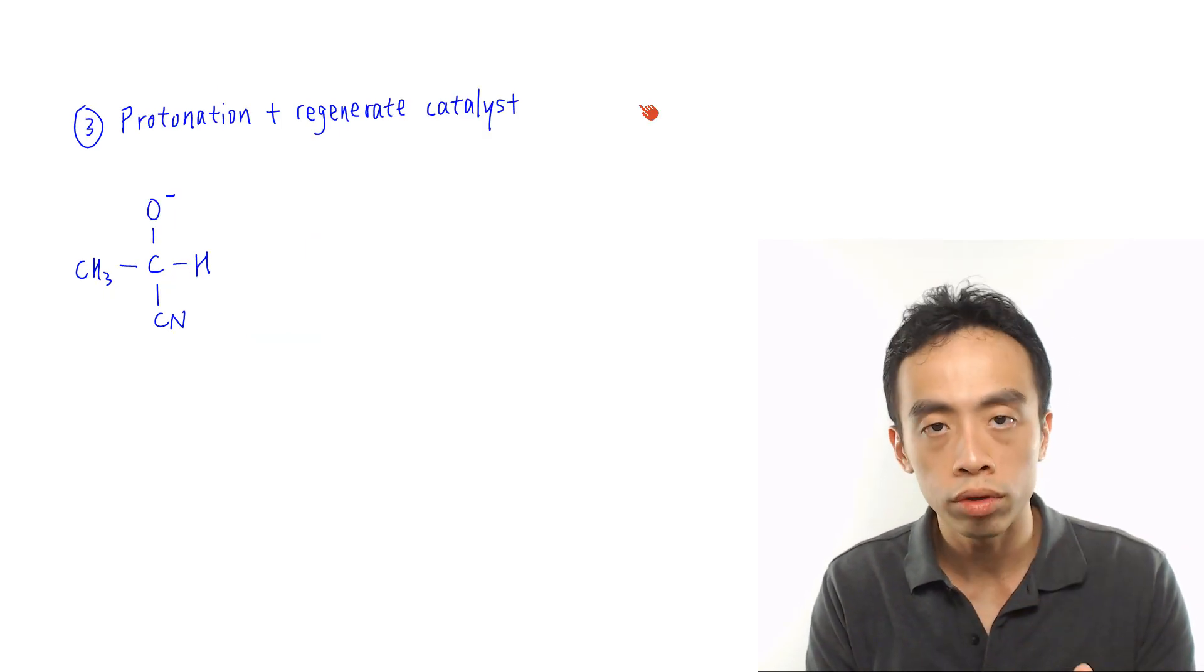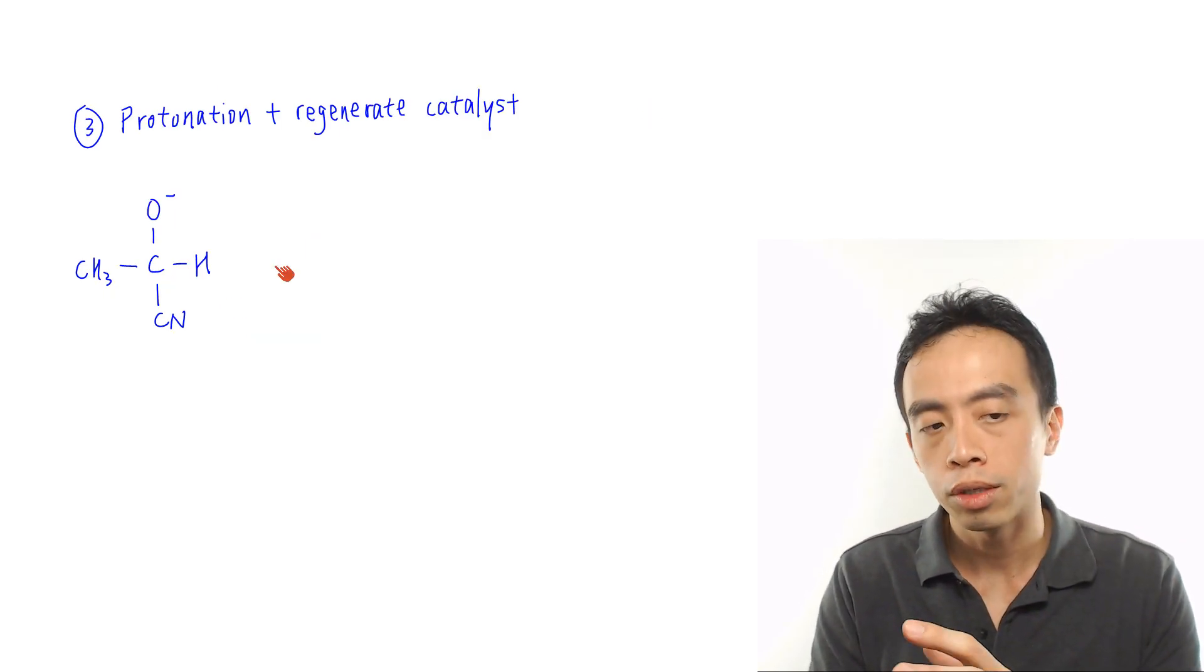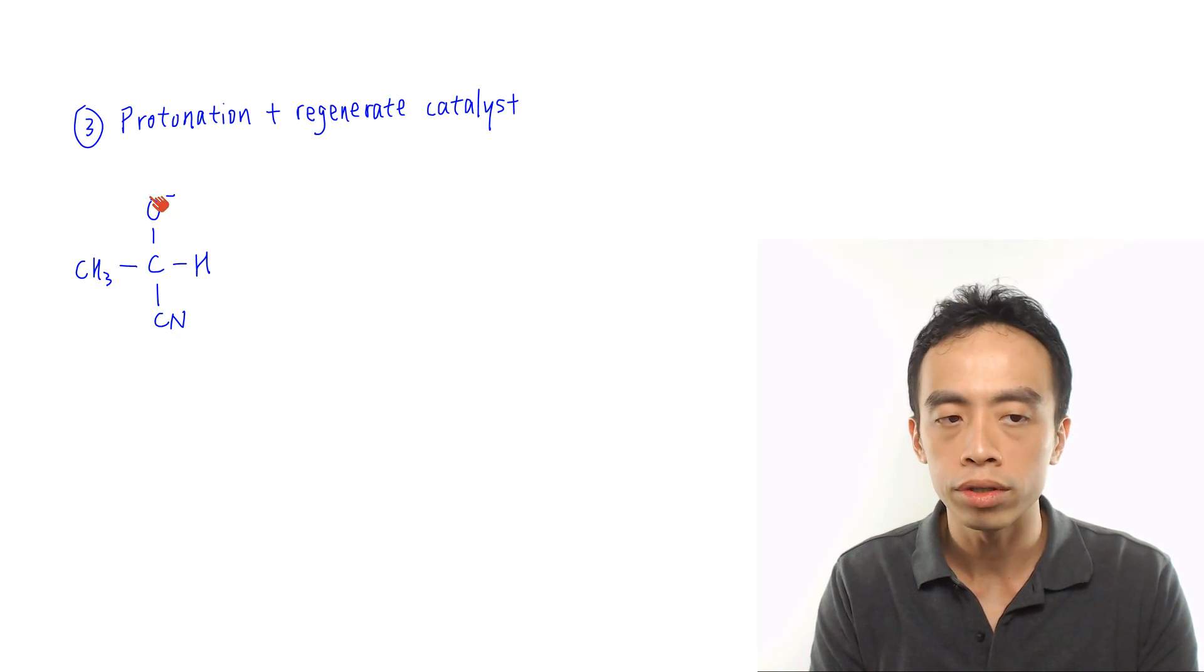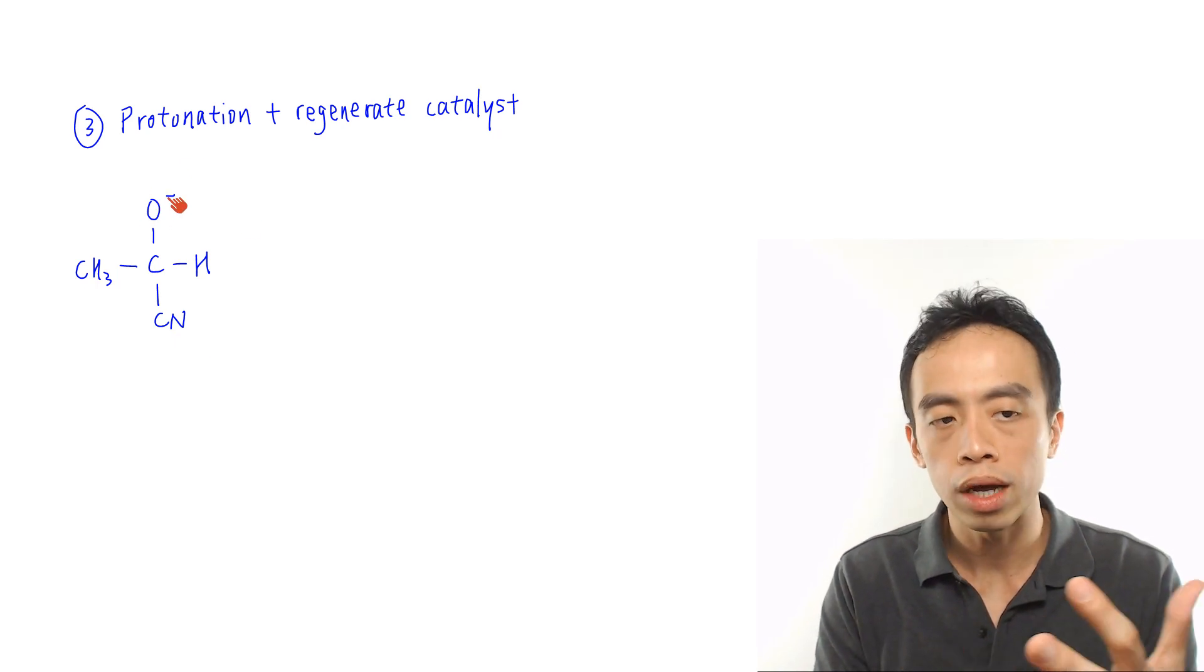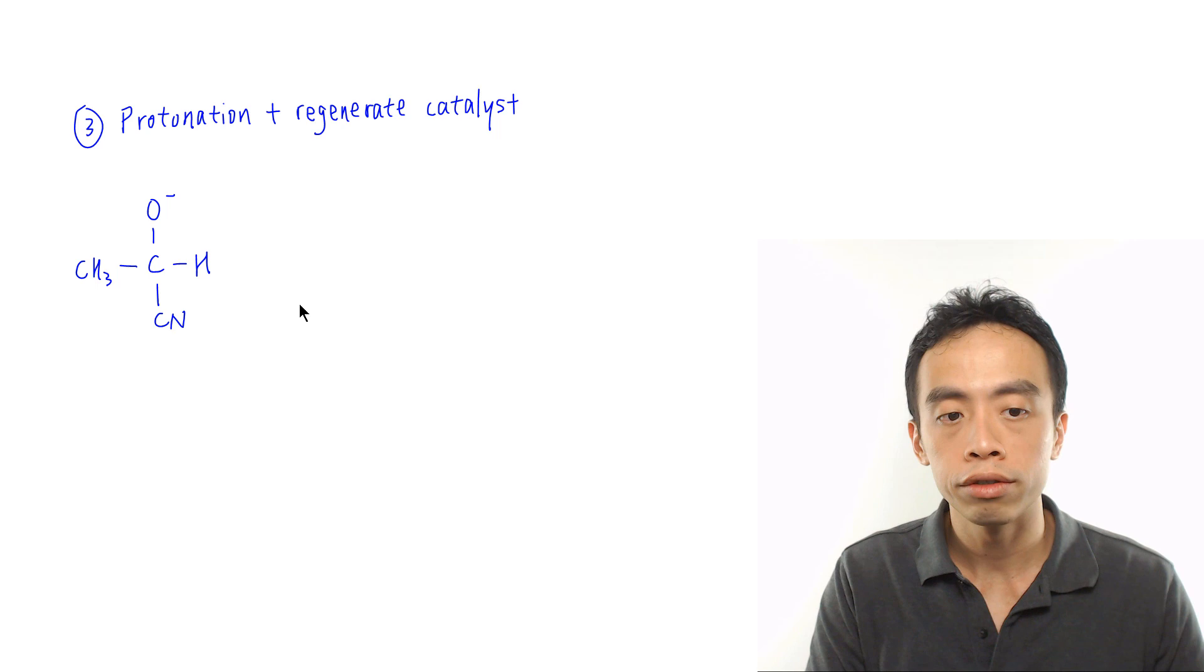The next step will be protonation of the intermediate. As mentioned, this is not very stable because I have an O⁻ here. So it will steal a hydrogen from HCN.